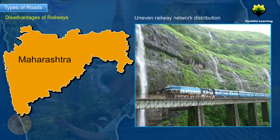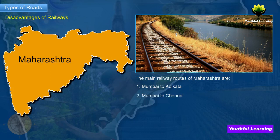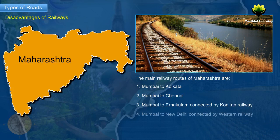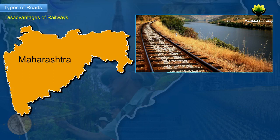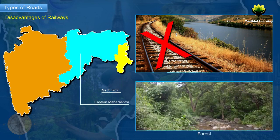The capital city is connected to major cities of India via railways. Mumbai is the headquarters of both the Central and Western Railway. The railway network distribution is uneven in Maharashtra due to its topography. The main railway routes of Maharashtra are: 1. Mumbai to Kolkata, 2. Mumbai to Chennai, 3. Mumbai to Ernakulam connected by Konkan Railway, 4. Mumbai to New Delhi connected by Western Railway, 5. Pune-Miraj-Bengaluru. These railway lines mostly run along the river valleys. Gadchiroli in Eastern Maharashtra does not have railway lines because of its extensive forest cover.